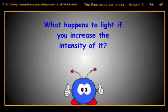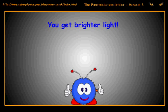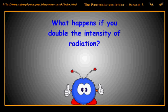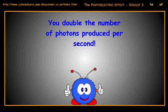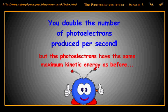What happens to light if you increase the intensity of it? You get brighter light. So what happens if you double the intensity of the radiation you shine onto the target? What happens then is you double the number of photons produced per second, but you don't alter their individual energies. You will therefore get twice the number of photoelectrons released, but their kinetic energy, their maximum kinetic energy, will still be exactly the same.